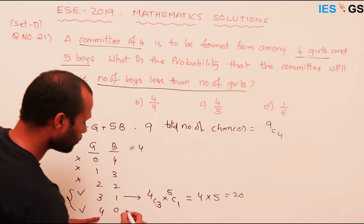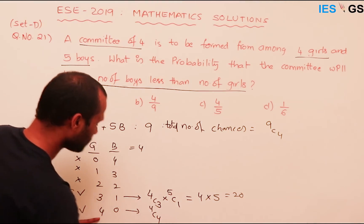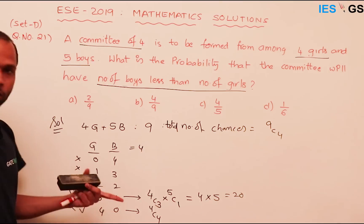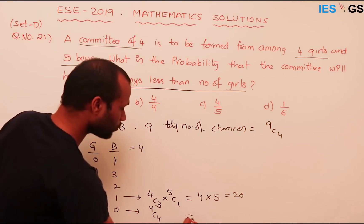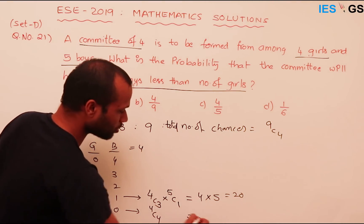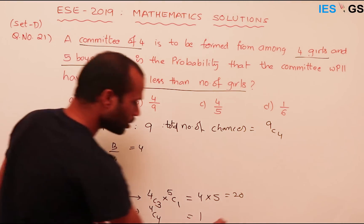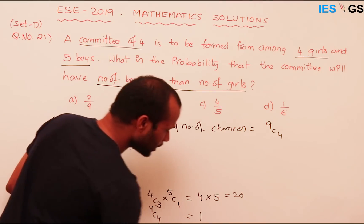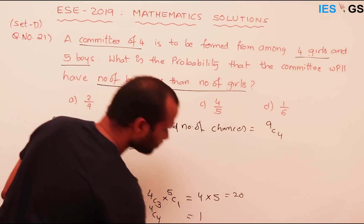Now for the four girls and zero boys case: the number of ways to select four girls out of four is 4C4, and we select zero boys. 4C4 equals 1. So the total favorable outcomes are 20 plus 1, which equals 21.